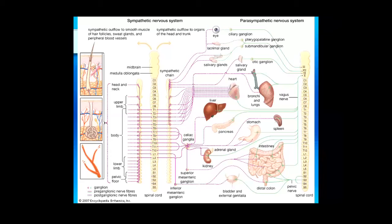Other very useful landmarks are the celiac ganglia and mesenteric ganglia further down the sympathetic chains. When talking about a chief complaint related to the abdominal cavity, these are good places to look for sympathetic dysfunction.